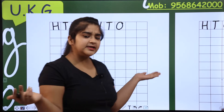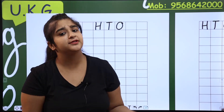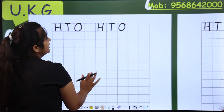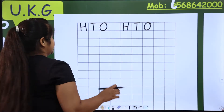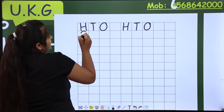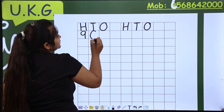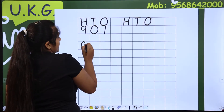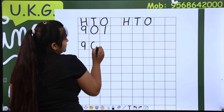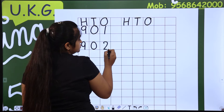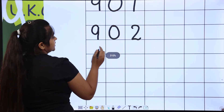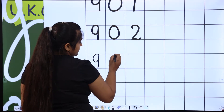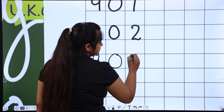So, when we learned 900 counting, 900 counting is very easy. So 901 is also easy — it is simple. Let's start: 9 hundreds, 0 tens, 1 — that is 901. 9 hundreds, 0 tens, 2 — that is 902. 9 hundreds, 0 tens, 3 — that is 903.